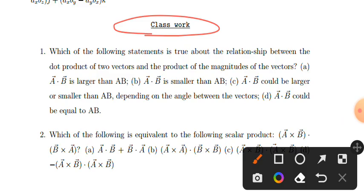Looking at cross-product and dot product categories. The question asks which of the following statements is true about the relationship between the dot product of two vectors and the product of the magnitude of the vectors.